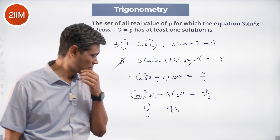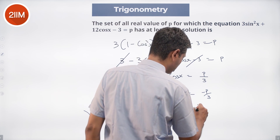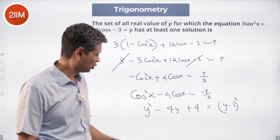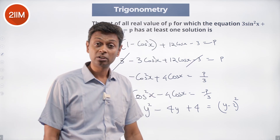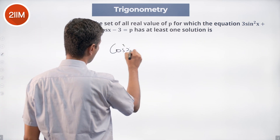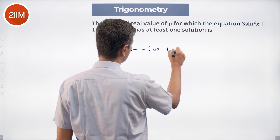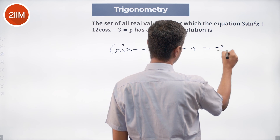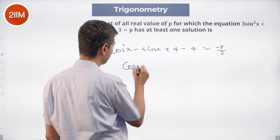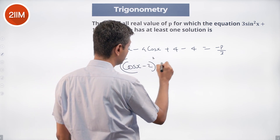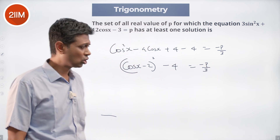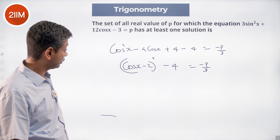I know that y² - 4y + 4 = (y - 2)², so similarly cos²x - 4cosx + 4 = (cosx - 2)². I rewrite the left side by adding and subtracting 4: cos²x - 4cosx + 4 - 4 = (cosx - 2)² - 4 = -p/3.